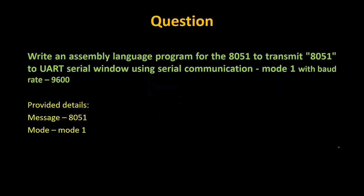The question given to us is: write an assembly language program for the 8051 to transmit data to a UART serial window using serial communication Mode 1 with a baud rate of 9600. The information we need: send the message '8051', operate in Mode 1, and determine the baud rate accordingly.